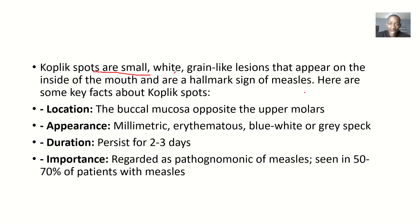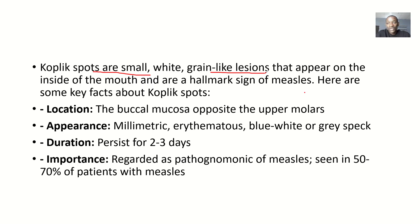Koplik spots are small, white, and greenish lesions that appear on the inside of the mouth. These Koplik spots are a hallmark sign of measles. That means if you see something described as a hallmark, it establishes that this person has measles. Once you see that thing, you don't need to think twice — the person actually has that disease condition.